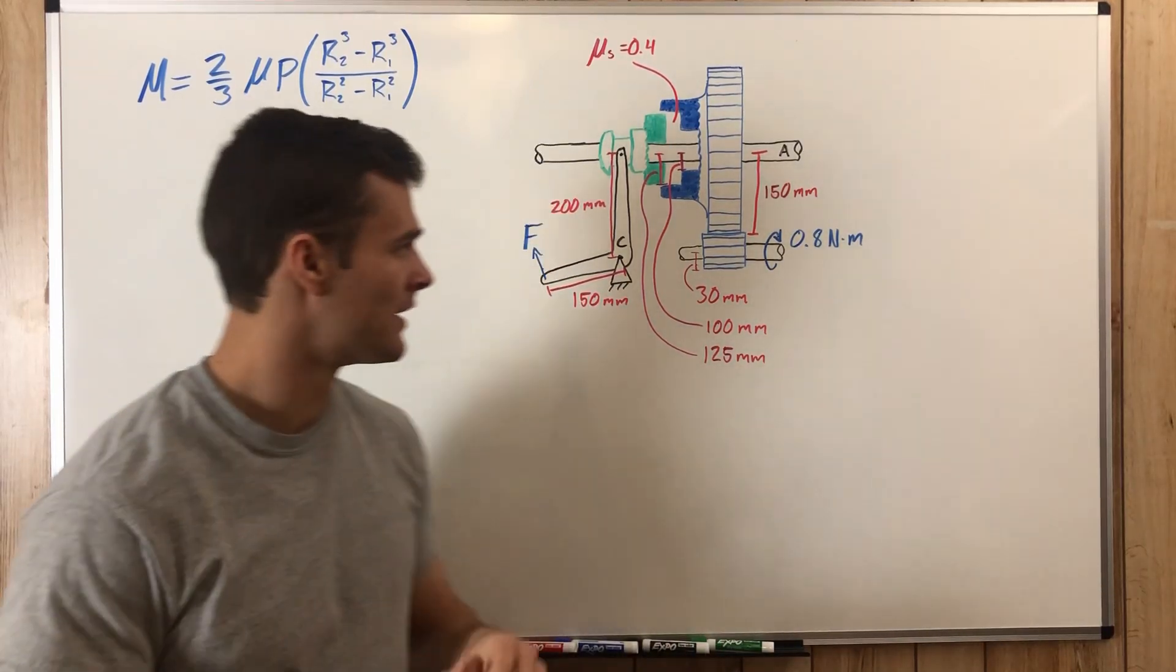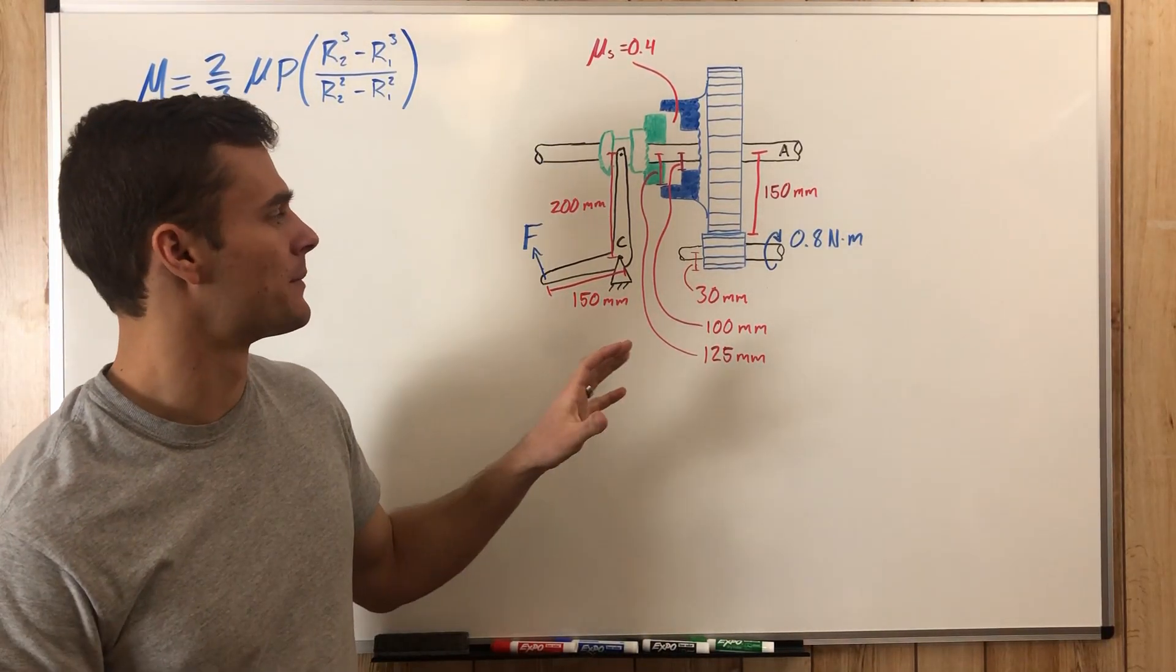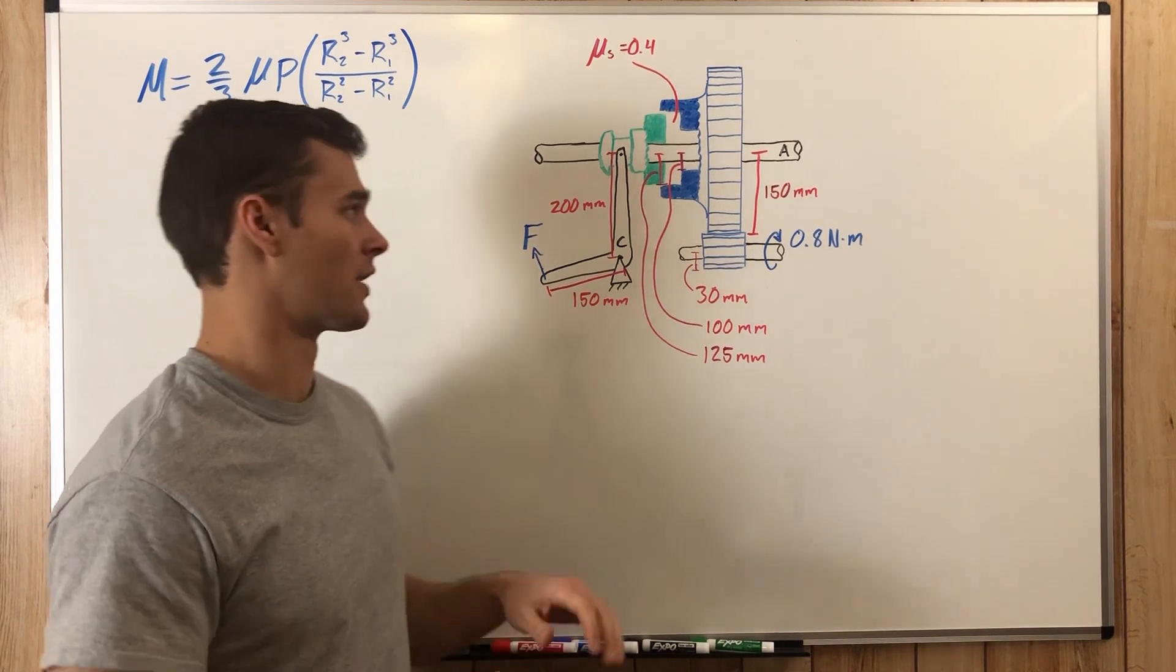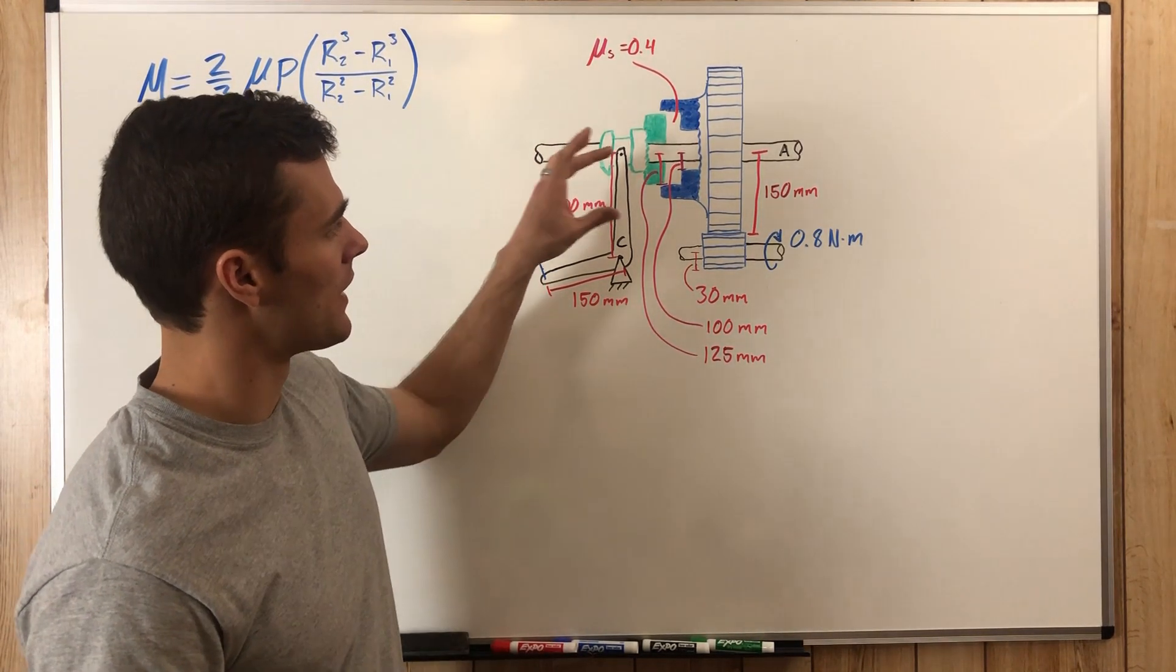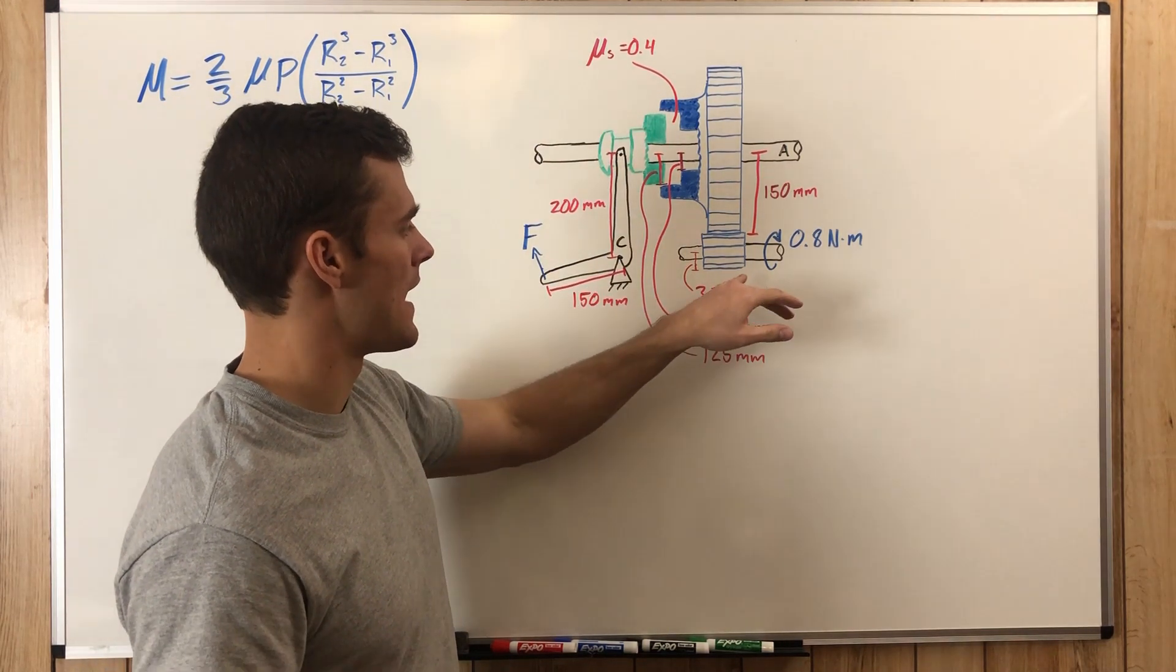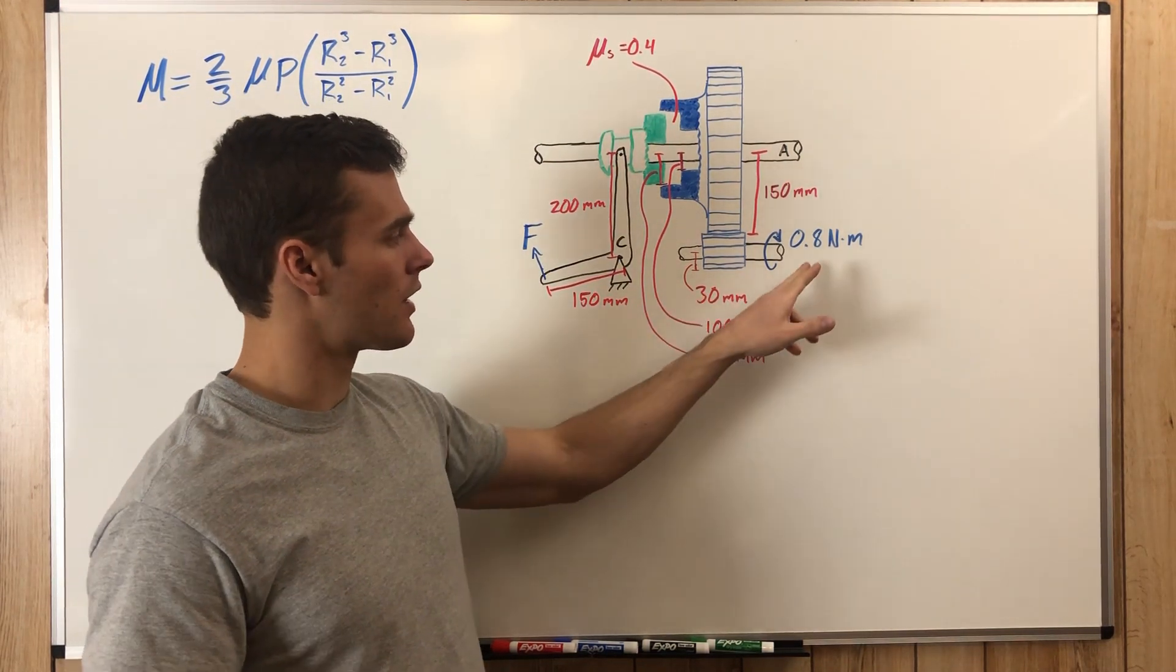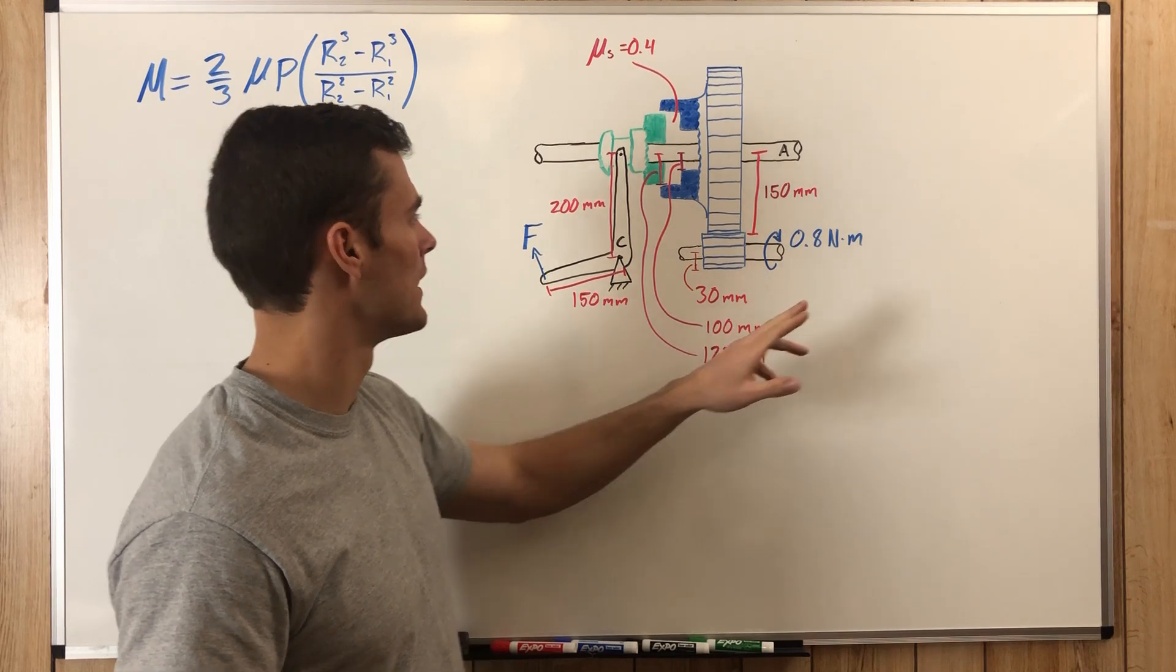So what we have here is a kind of complicated mechanism. We have a large gear here and a small gear here, and the small gear has a torque or a moment applied to it of 0.8 newton meters.